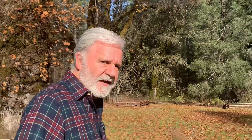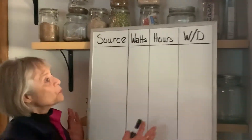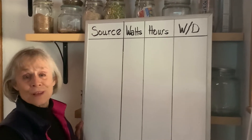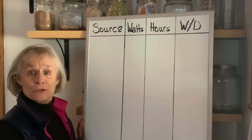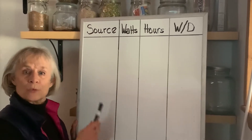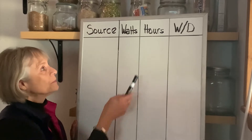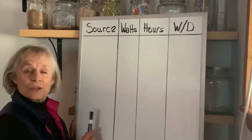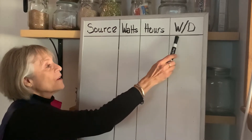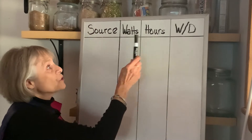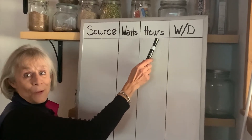Karen and I are going to show you how to calculate electrical demand. Start by creating a spreadsheet with four columns. The first column is everything in the house that uses electricity. The second column is how many watts each of those things uses. The third column is how many hours a day you use it. The fourth column is watts per day, which you get by multiplying watts times hours.